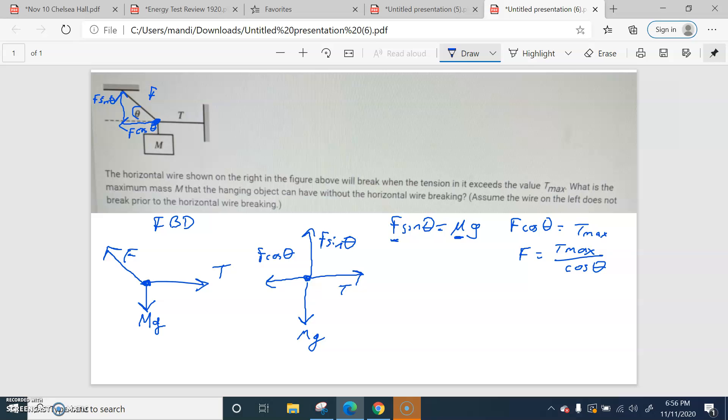I'm going to plug that F in over here. So I'm going to put T max over cosine theta. That's what I'm putting instead of F. Sine theta is still over there. Sine theta equals mass times gravity.